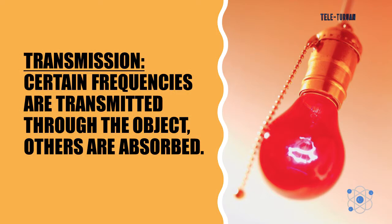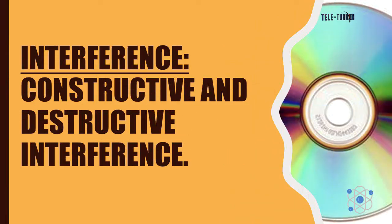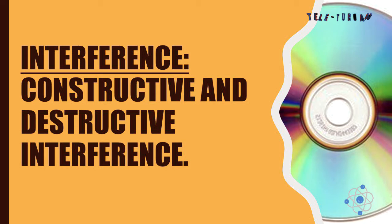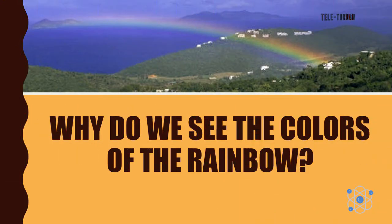Transmission, on the other hand, happens when certain frequencies are transmitted through the object while others are absorbed. Scattering is the re-radiation of certain frequencies of light striking small suspended particles. Interference may be described as constructive and destructive interference. Dispersion is the angular separation of a light wave during refraction.